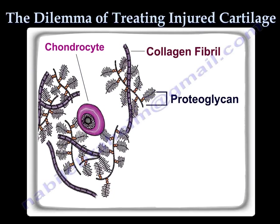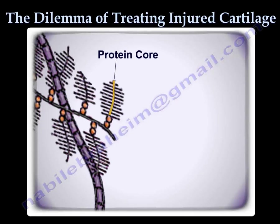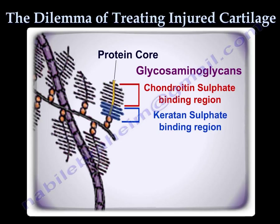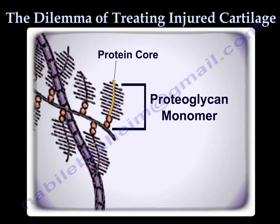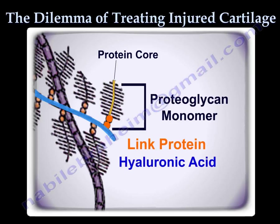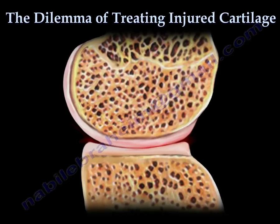Proteoglycans are composed of numerous glycosaminoglycans attached to a core protein. The predominant glycosaminoglycans in cartilage are chondroitin sulfate and keratin sulfate. Within the cartilage matrix, there are numerous proteoglycan monomers attached by link protein to a molecule of hyaluronic acid. This is all woven with collagen to form an elastic and compressible structure.